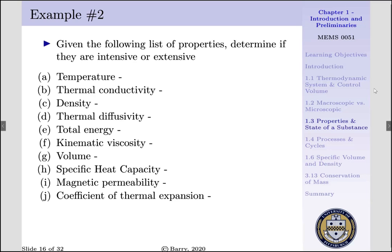Say we're given the following list of properties, and we want to determine if they are intensive or extensive. We know temperature is intensive; it does not depend upon the mass of the system. Thermal conductivity is a measure of how easily heat propagates through material, and this does not depend upon the mass of the system. Therefore, thermal conductivity is intensive.